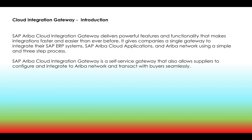It gives companies a single gateway to integrate their SAP ERP systems, SAP Ariba cloud applications, and the SAP Ariba Network using a simple three-step process. SAP Ariba Cloud Integration Gateway is a self-service gateway that also allows suppliers to connect, configure, and integrate to Ariba Network and transact with the buyer seamlessly. Cloud Integration Gateway provides a wizard so that suppliers can integrate their applications easily with Ariba Network.